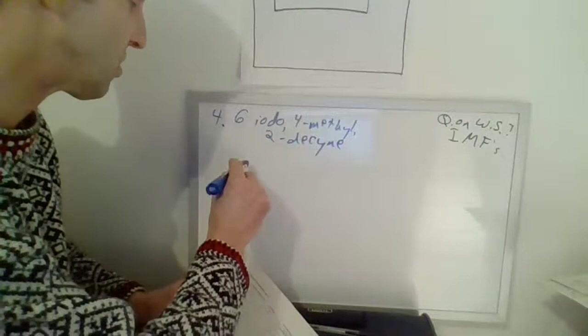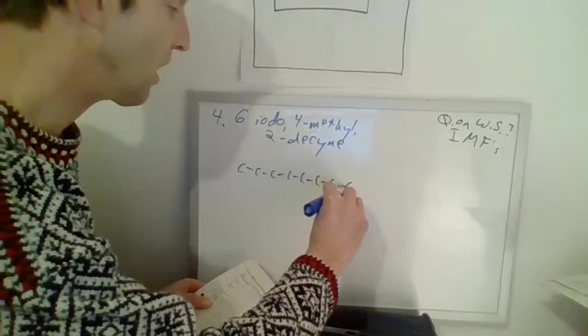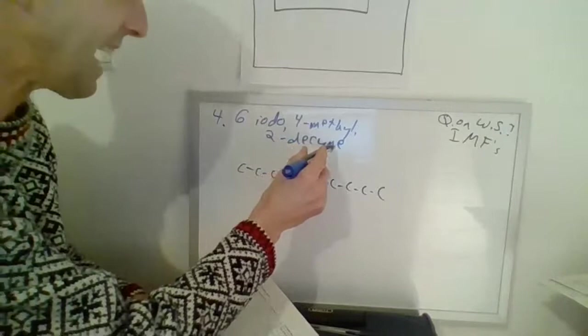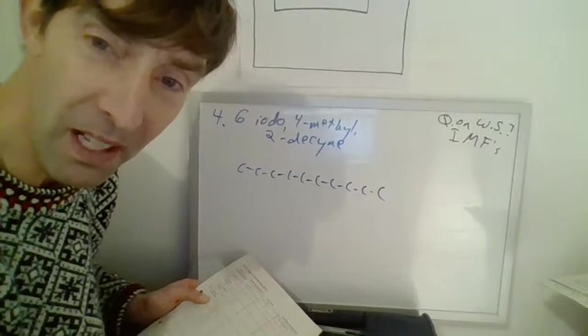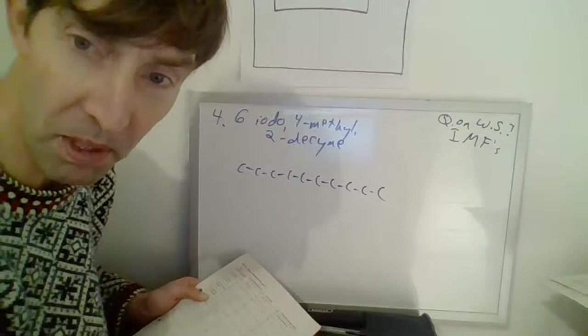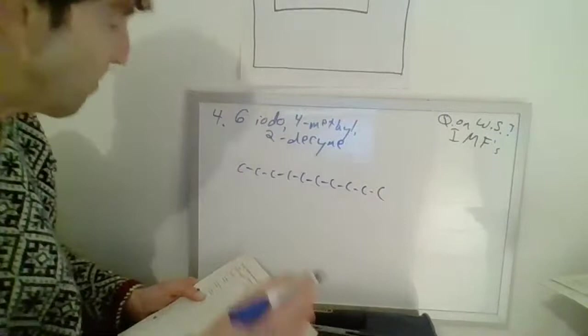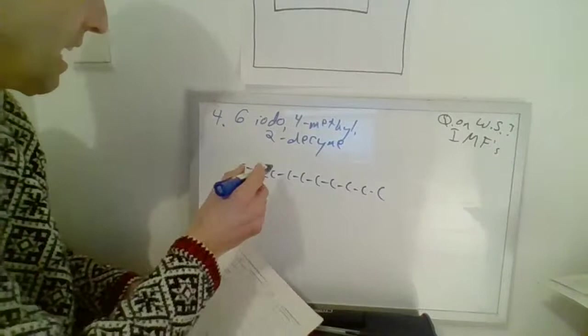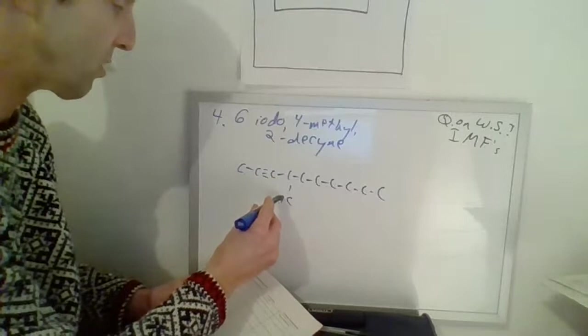So, we've got deca, right? That's 10, isn't it, everybody? One, two, three, four, five, six, seven, eight, nine, ten. I got a two-deckine. Y-N-E means there's a bond. What was Y-N-E? Triple bond, good. Triple bond on the second bond. So, that becomes a triple. Now, let's go to the next thing. Four-methyl, we all know how to do that. One, two, three, four. There's a methyl.